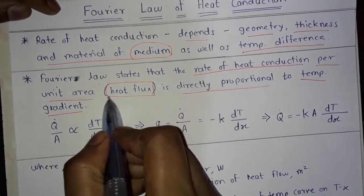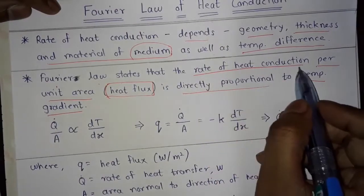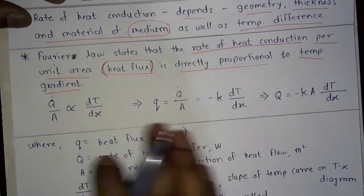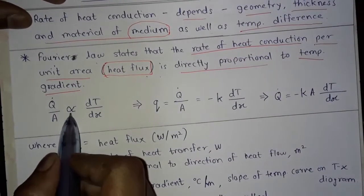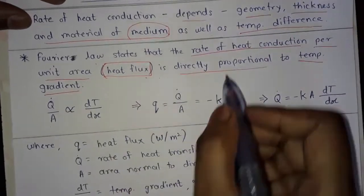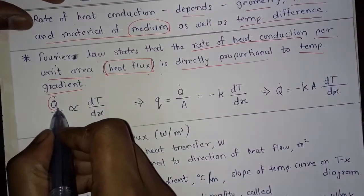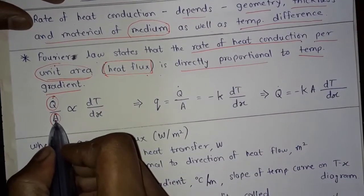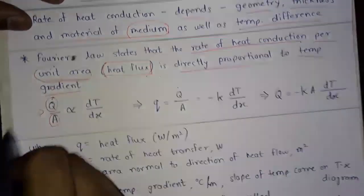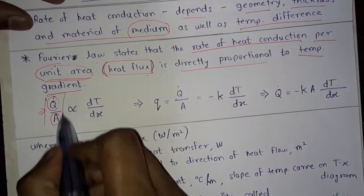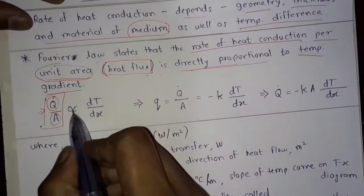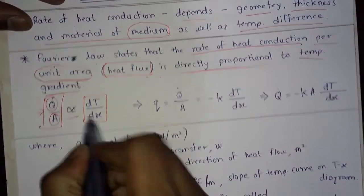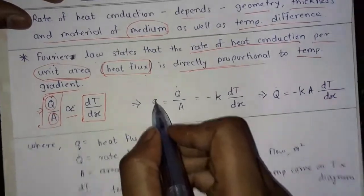Heat flux is the rate of heat conduction per unit area. Here, q-dot upon A is directly proportional to dT upon dx. The rate of heat conduction is q-dot, per unit area is A, and this whole term is called heat flux, which is directly proportional to the temperature gradient dT upon dx.